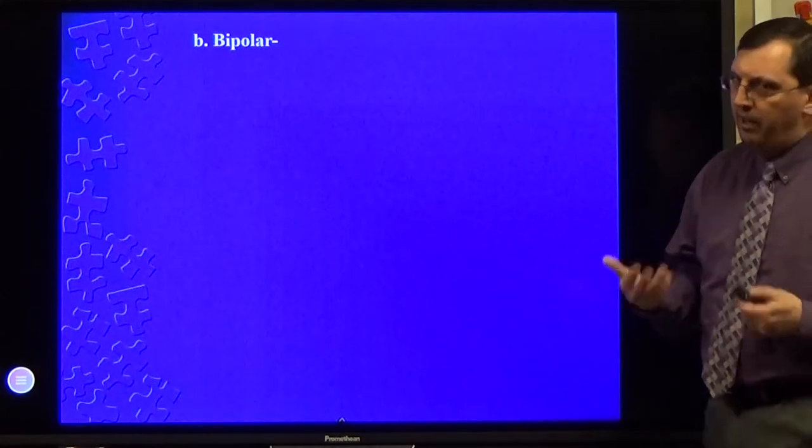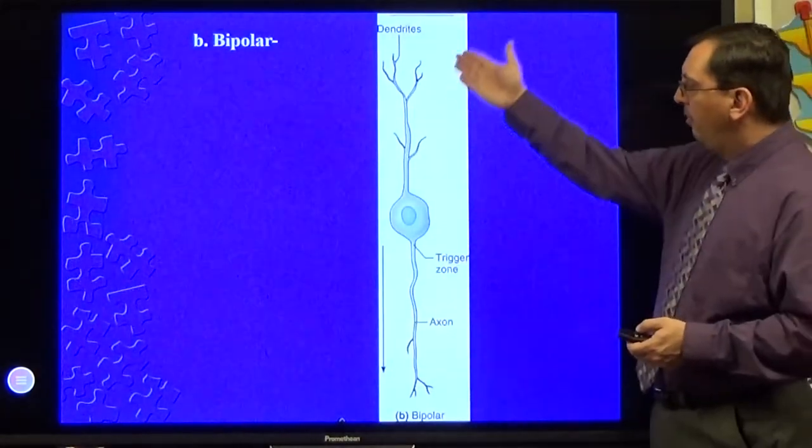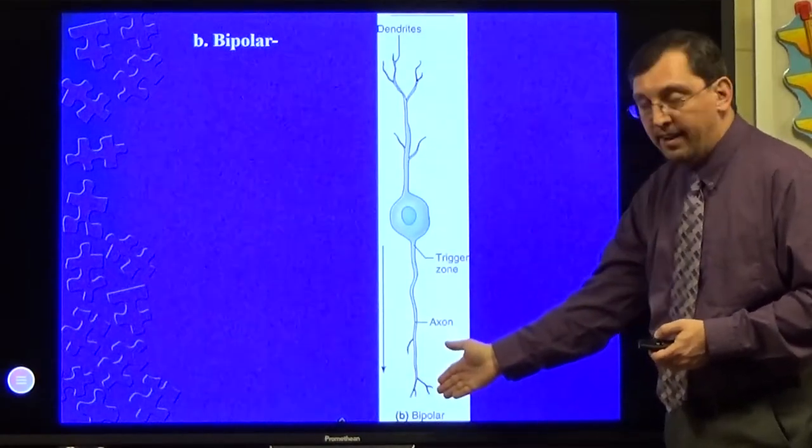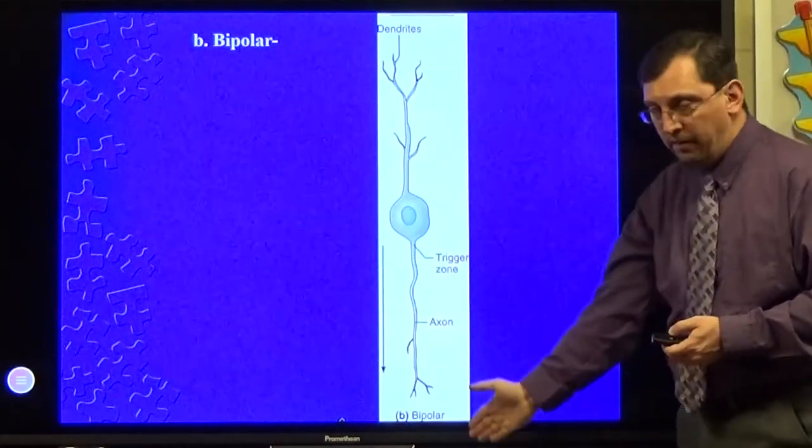Bipolar, as the name implies, has two poles. You basically have one axon, one dendrite with a bunch of little branches off of it and then one axon. So it's pretty straightforward that way. You still have the cell body in the middle.